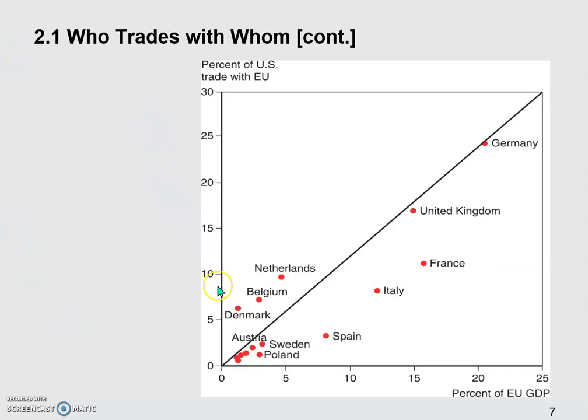So here on this figure, the vertical axis is percent of the US trade with the EU and horizontal axis is percent of the EU GDP. In other words, here, you should know from these two axes that we're testing the relationship between the size of economy and its trading volume. Let's use the Netherlands as an example here. You'll find that based upon this dot, Netherlands trade with the US accounts for about 10% of the trade, the total trade between US and Europe. And that's what we find on the vertical axis. If you go down to the horizontal one, you'll find that Netherlands GDP accounts for slightly less than 5% of EU's total GDP.